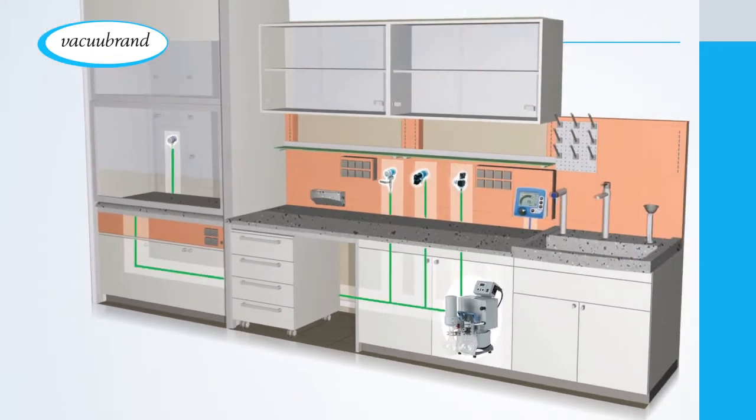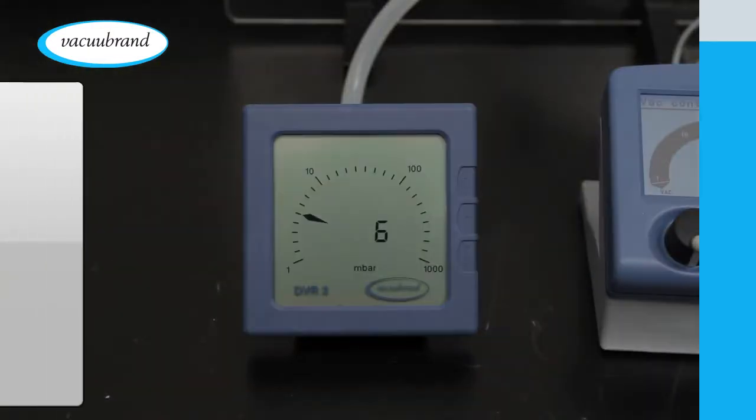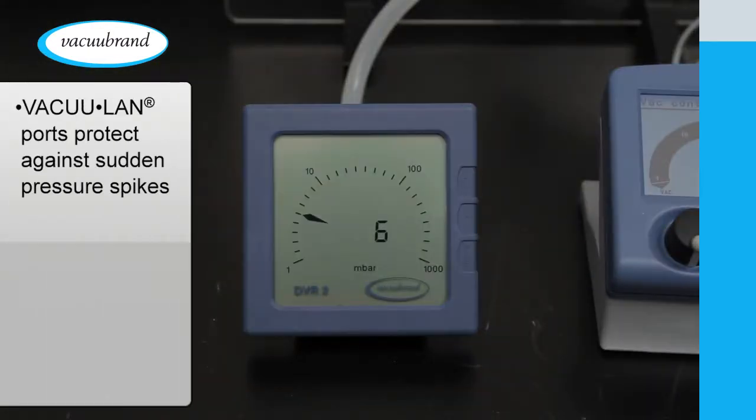A VacuLand network can supply vacuum that's deep enough for nearly all lab operations, and VacuLand ports protect against sudden pressure spikes if an adjacent port on the network is open during your run.